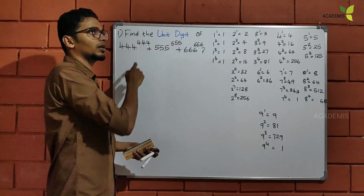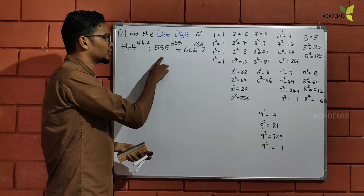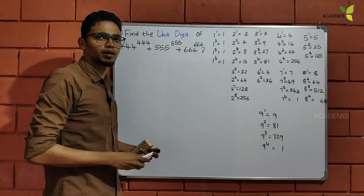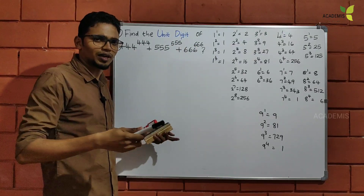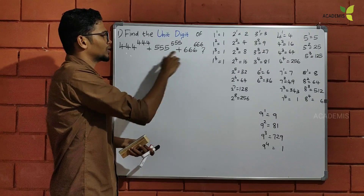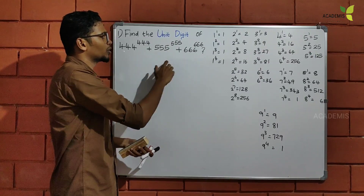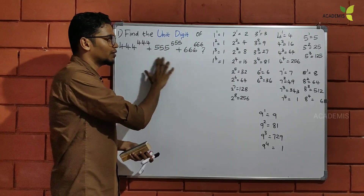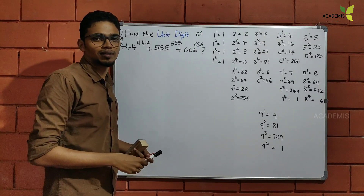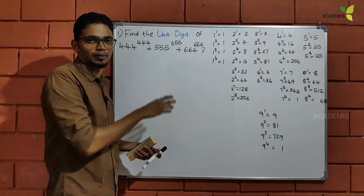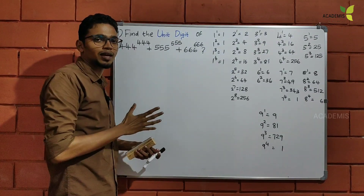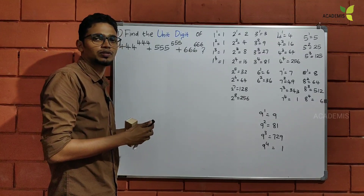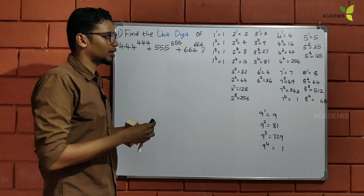The question is: 664 raised to 564, plus 115 raised to 565, raised to 665. We need to find the unit digit of this expression. That is the question we are going to ask.